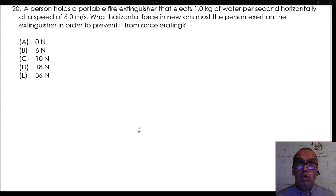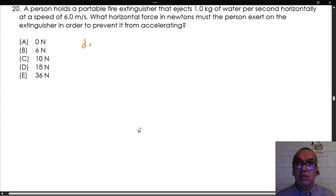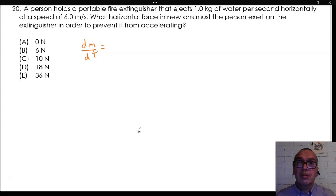A person holds a portable fire extinguisher that ejects 1 kg of water per second horizontally at a speed of 6 meters per second. What horizontal force in newtons must the person exert on the extinguisher in order to prevent it from accelerating?